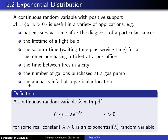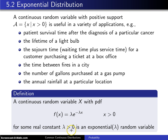Here's the definition of an exponential random variable: a continuous random variable x with probability density function f of x equals lambda times e to the minus lambda x, for x greater than zero, for some constant lambda, which is a positive parameter. That is an exponential lambda random variable.